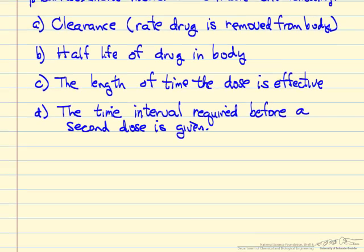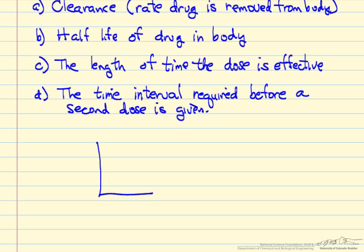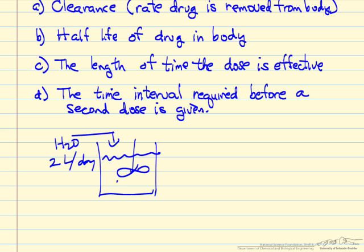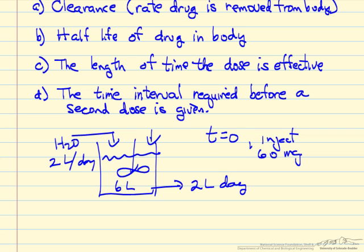We're looking at a simple model of a well-mixed reactor. 2 liters per day of water come into this reactor with volume 6 liters that stays constant, so 2 liters per day is leaving. At time equals 0, we inject 60 mg of the drug as a one-shot injection. This is a semi-batch reactor with constant volume and constant flow rates in and out.